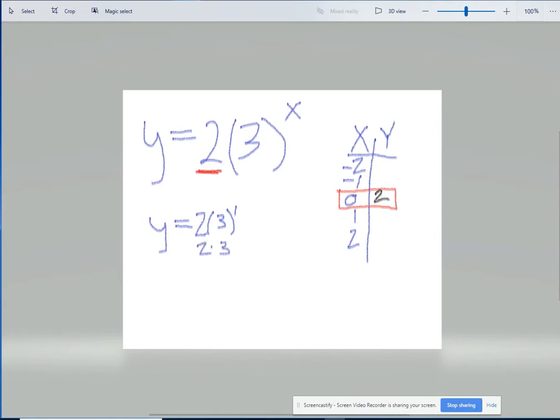So 2 times 3 to the 1 is just 2 times 3. 2 times 3 is 6, so then I put 6 as my next spot in my table right here.